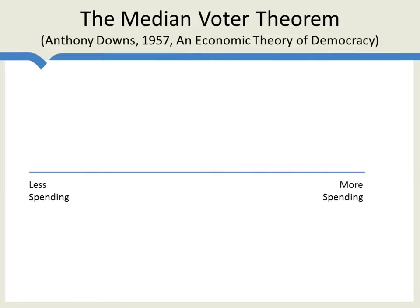Here's an application of politics based upon Anthony Downs' influential book, An Economic Theory of Democracy from 1957. Suppose we think about our space as being from less spending over here towards more spending over here. Let's imagine the Republican Party chooses a position towards the less spending part of the spectrum. Notice that parties don't really offer prices for their product, so this is a good application of the fixed-price version of the model. The Democrats will choose to take a position just to the right of the Republicans, getting a majority of the voters and winning the election.